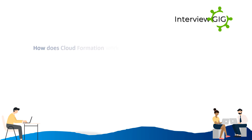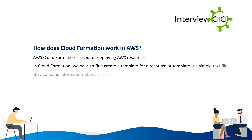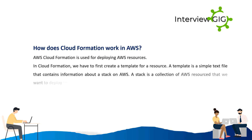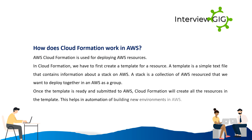AWS CloudFormation is used for deploying AWS resources. We first create a template — a simple text file containing information about a stack on AWS. A stack is a collection of AWS resources that we want to deploy together as a group. Once the template is submitted to AWS, CloudFormation creates all the resources defined in the template, helping automate the building of new environments in AWS.